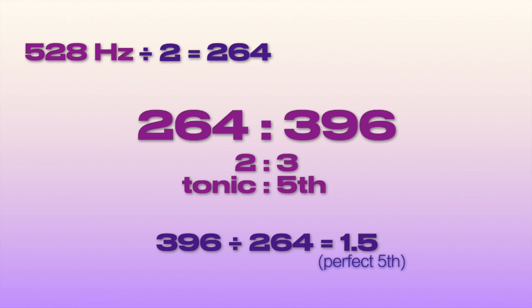When we divide 396 by 264 we get 1.5, the same value we get when dividing the ratio of the perfect fifth, 3 to 2.